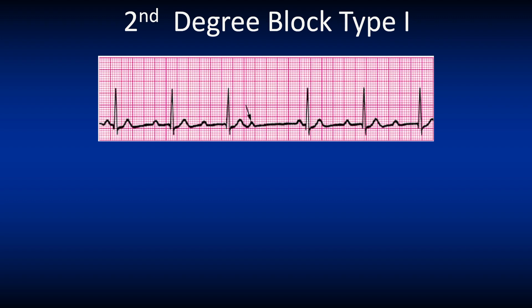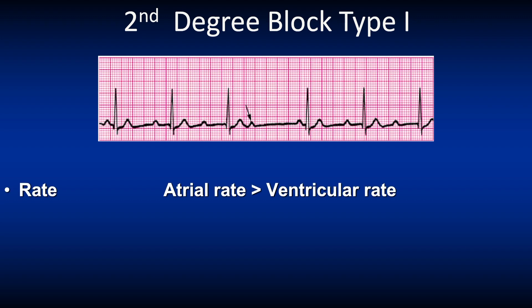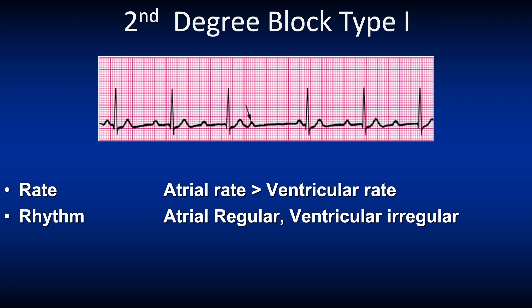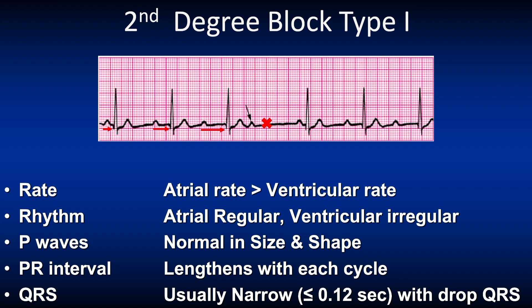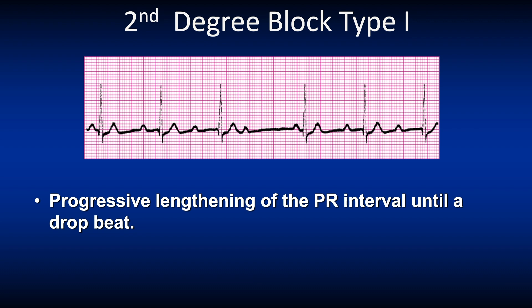Let's review the second degree block type 1. The atrial rate is more than the ventricular rate. The atrial rhythm is regular versus the ventricular rhythm, which is irregular, as there are dropped beats. The P waves are normal in size and shape. The PR interval lengthens with each cycle, although it may be a slight lengthening until a dropped beat. Look at the PR interval — it gets wider and wider, and there we see a P wave with the black arrow, and suddenly there is no QRS complex. The main concept to remember is that there is a progressive lengthening of the PR interval until you find a P wave that is not followed by a QRS complex.